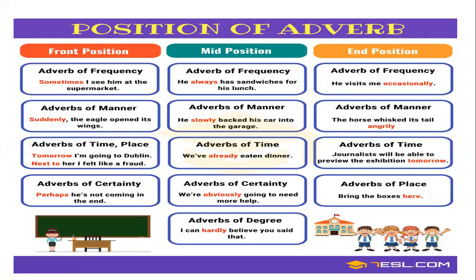Adverbs can appear in different positions in a sentence. In the front position, we can have adverbs of frequency — for example, 'Sometimes I see him at the supermarket.' Adverbs of manner: 'Suddenly the eagle opened its wings.' Adverbs of time or place: 'Tomorrow I'm going to Dublin.' Adverbs of certainty: 'Perhaps he's not coming in the end.' These are adverbs in the initial position of the sentence.